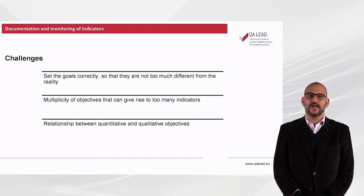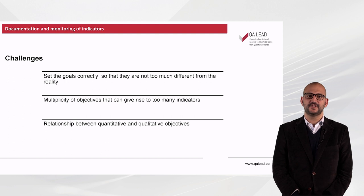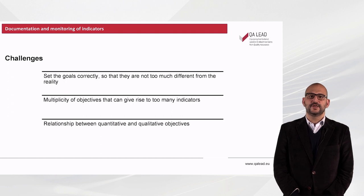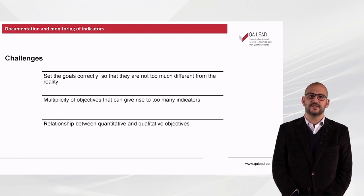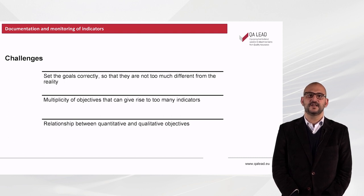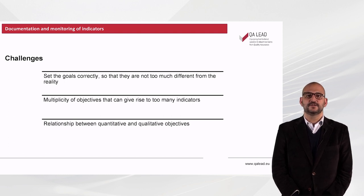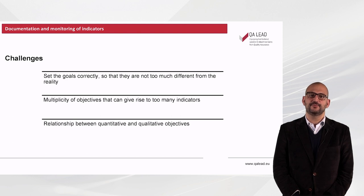When we move on to the actual phase of monitoring the performance indicators and creating a system of indicators, there are three major difficulties. First, we need to set the goals correctly so that they are not too different from reality. We also must take into account the multiplicity of objectives, which can give rise to many indicators and increasing difficulty in keeping the system up to date. And finally, the relationship between quantitative and qualitative objectives, the latter ones being more difficult to measure and to monitor.